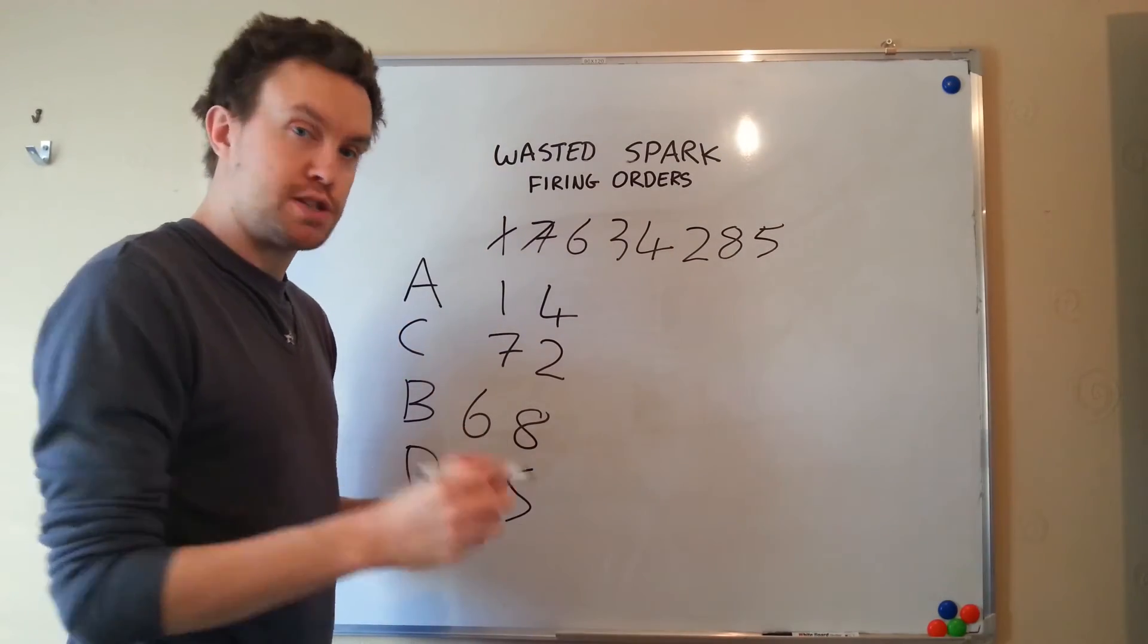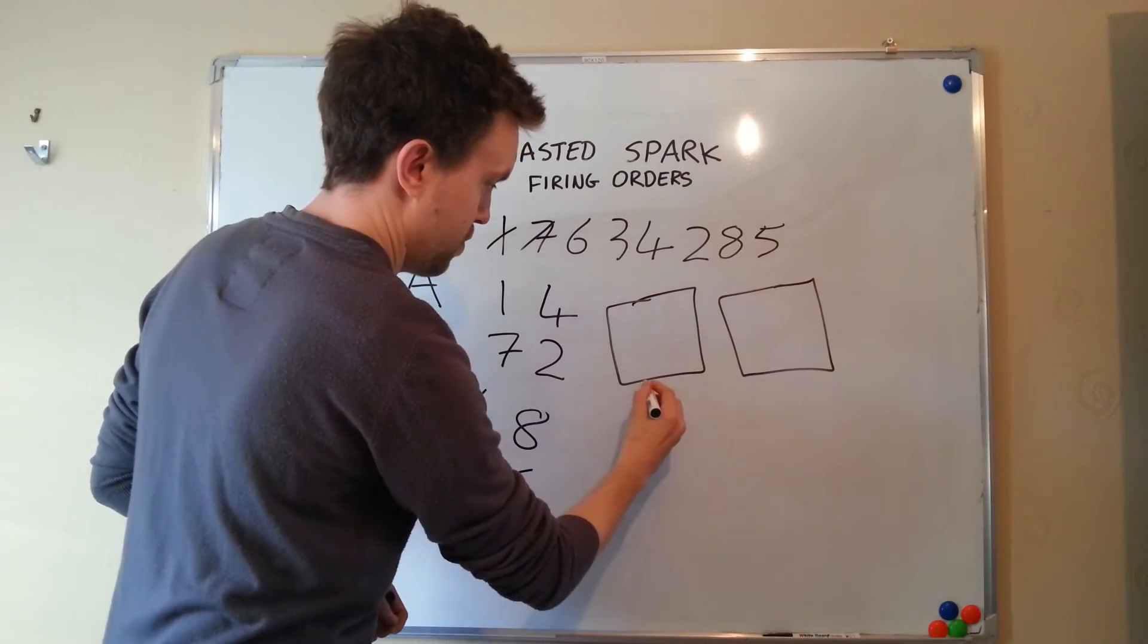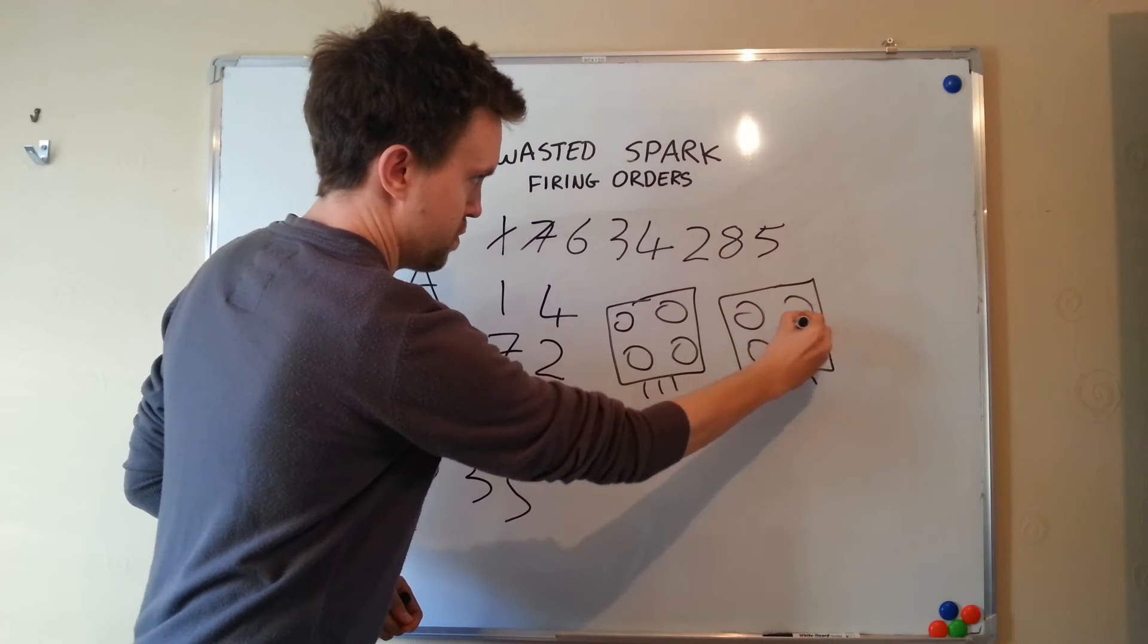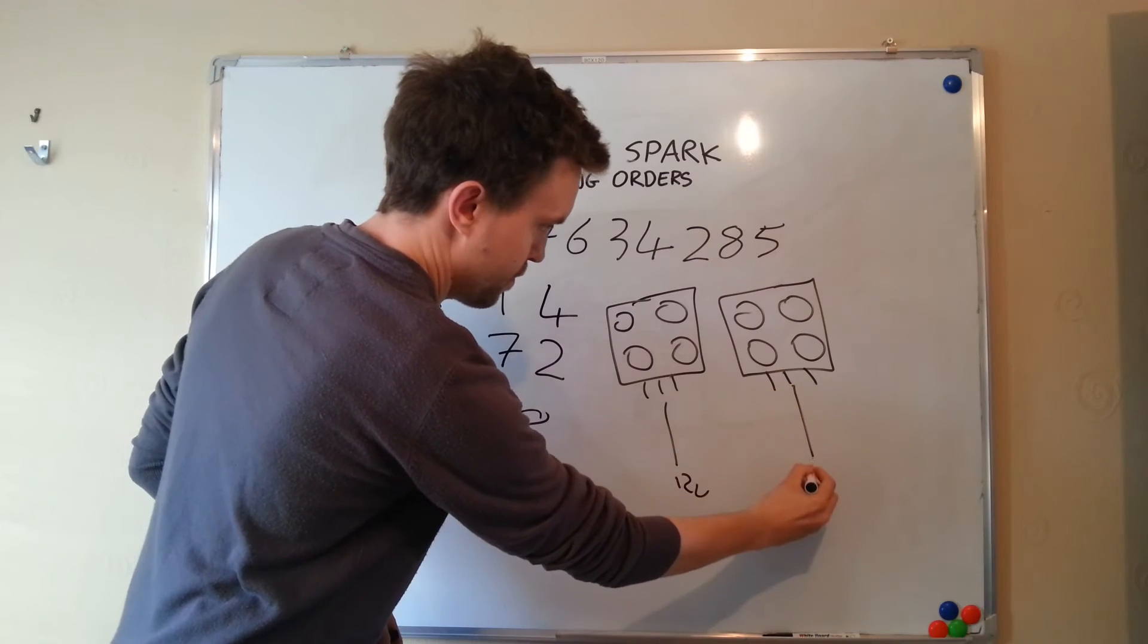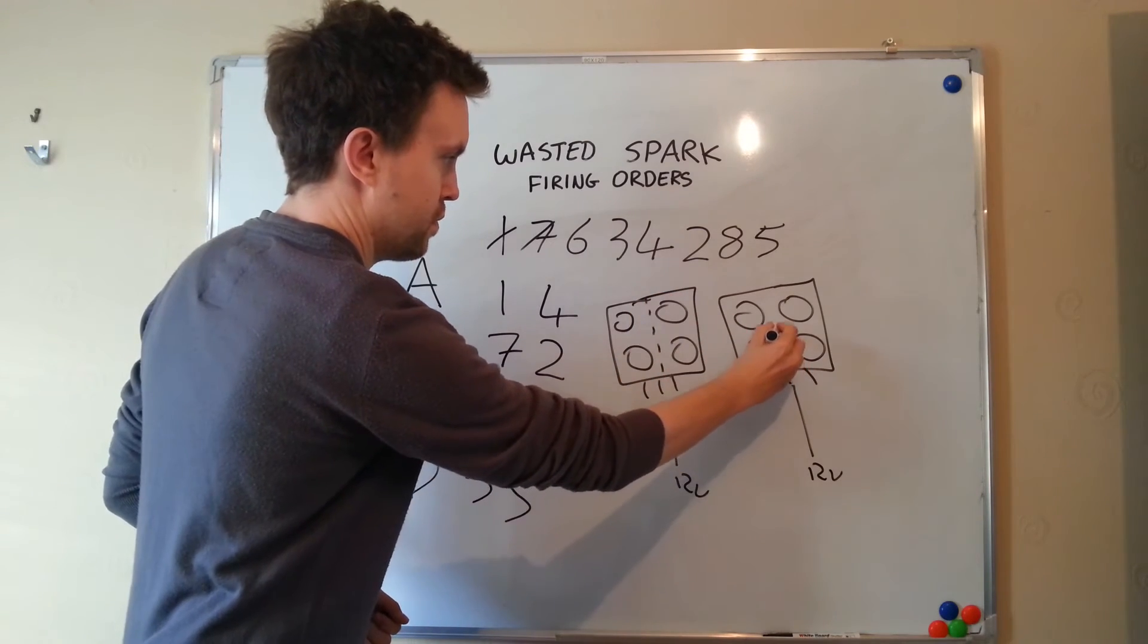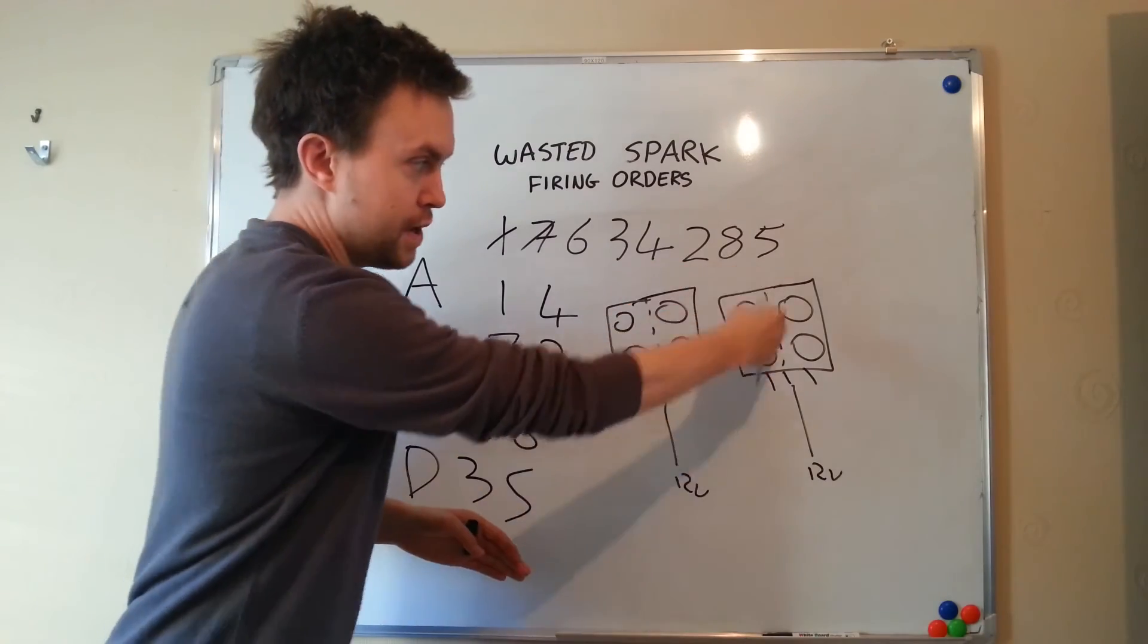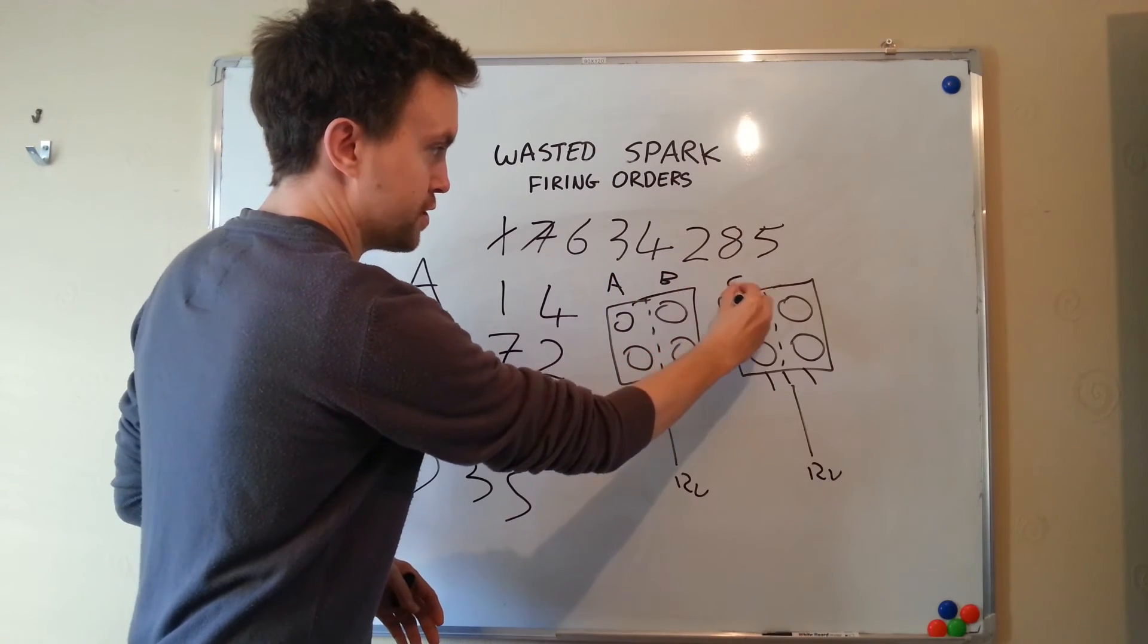So if we then draw out our coil pack diagram, it would look something like this. Again, obviously power to the center pins in each case. And we'll draw our imaginary line down the middle of each coil. And now what we'll do is we'll label our coils as we see fit. Now obviously, depending on the positioning on the engine and how long the HT leads are, you can move these around. But as long as you keep them in their relative banks, it will be absolutely fine. So if we say coil A is this coil, coil B is this coil, coil C is this coil, and D here.